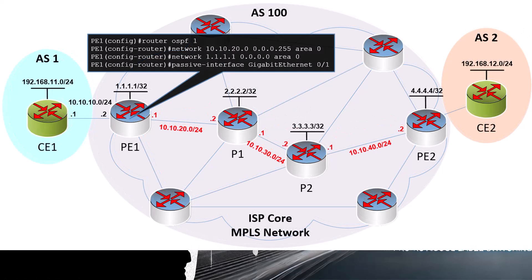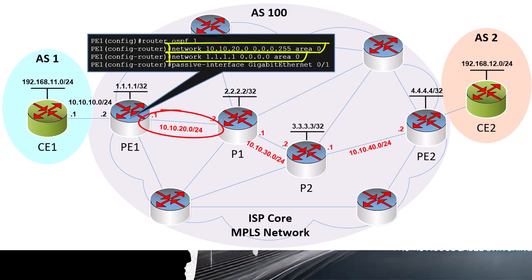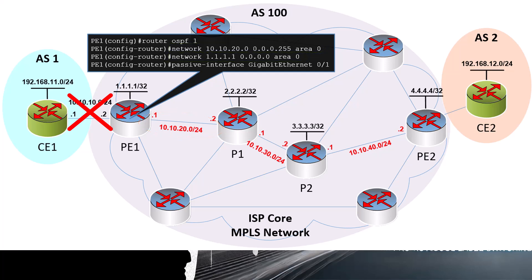Here's a sample of the OSPF configuration within our PE1 router. We're advertising the loopback address as well as the network serving this link, but notice that we are not advertising the network of the interface that connects to the CE1 router — this is where the OSPF domain ends. Ideally, we should configure that interface as a passive interface so that no OSPF messages like hello messages are sent to the CE1 router at all.